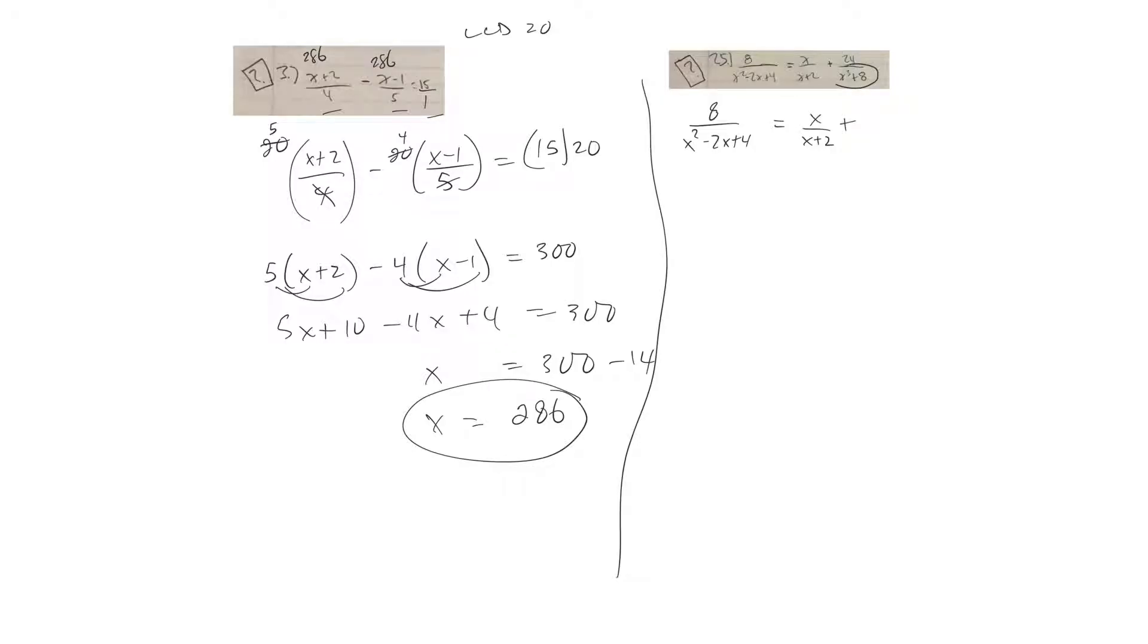The next one is a sum of cubes. And the sum of cubes formula tells me that the answer to that is going to be x plus 2 and x squared minus 2x plus 4.